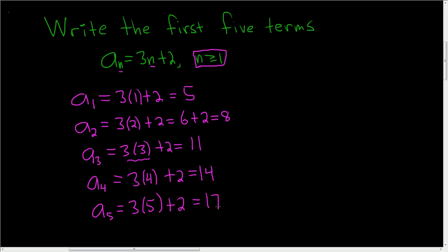So the first five terms are 5, 8, 11, 14, and 17. And that's it.